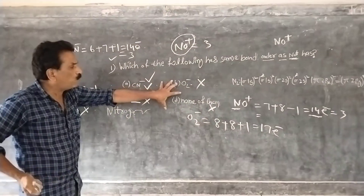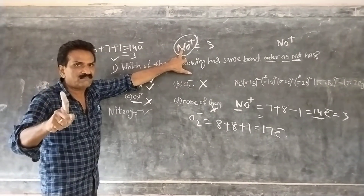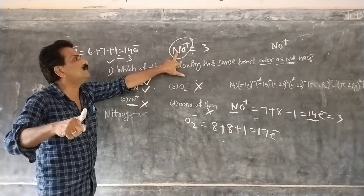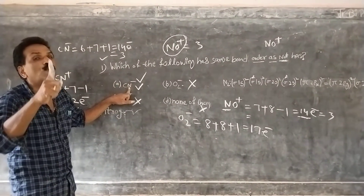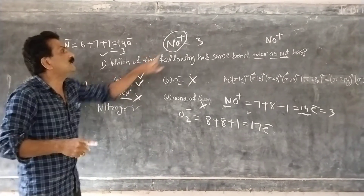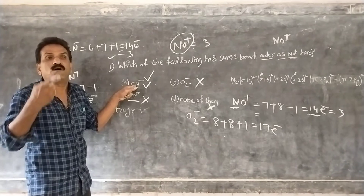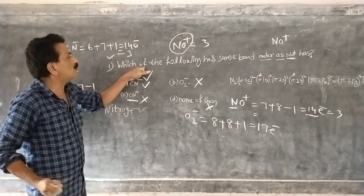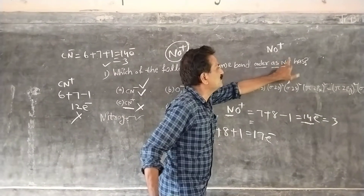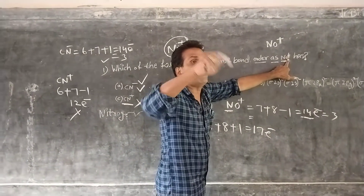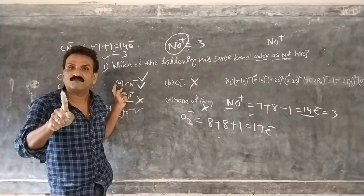So among the four options, NO⁺ has 14 electrons and bond order 3. CN⁻ also has 14 electrons and bond order 3. Therefore, CN⁻ has the same bond order as NO⁺. CN⁻ is the correct answer.